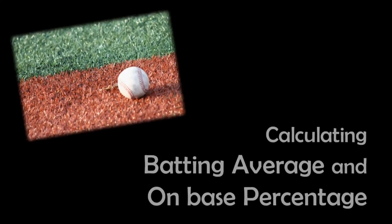Two of the most common statistics that are used to analyze how good a player is at hitting are batting average and on-base percentage. So let's look at how those are calculated.